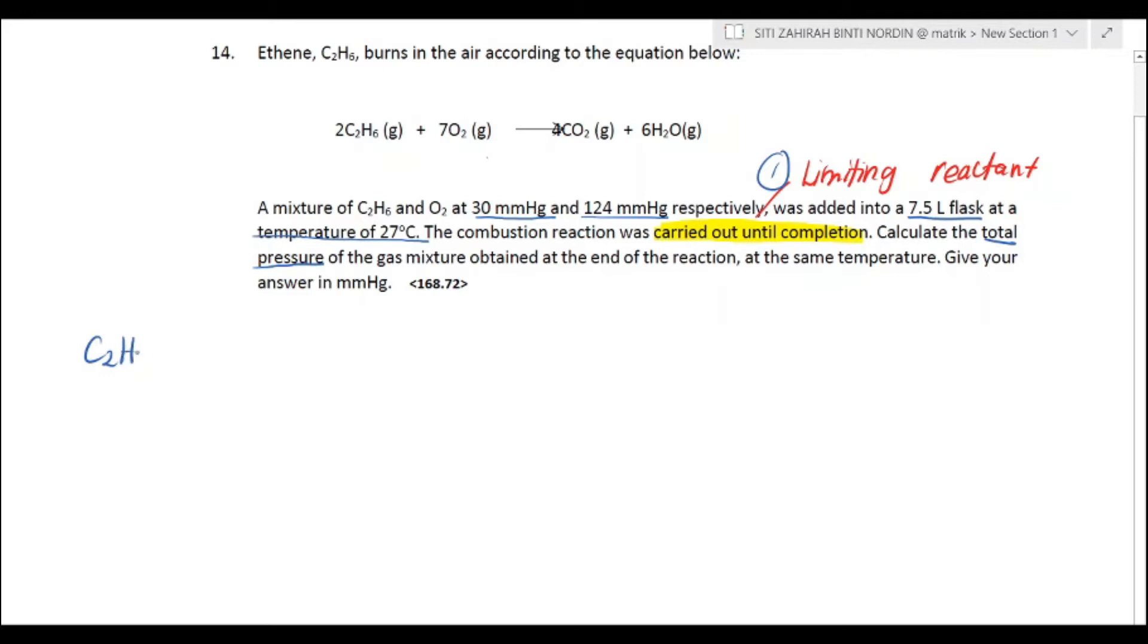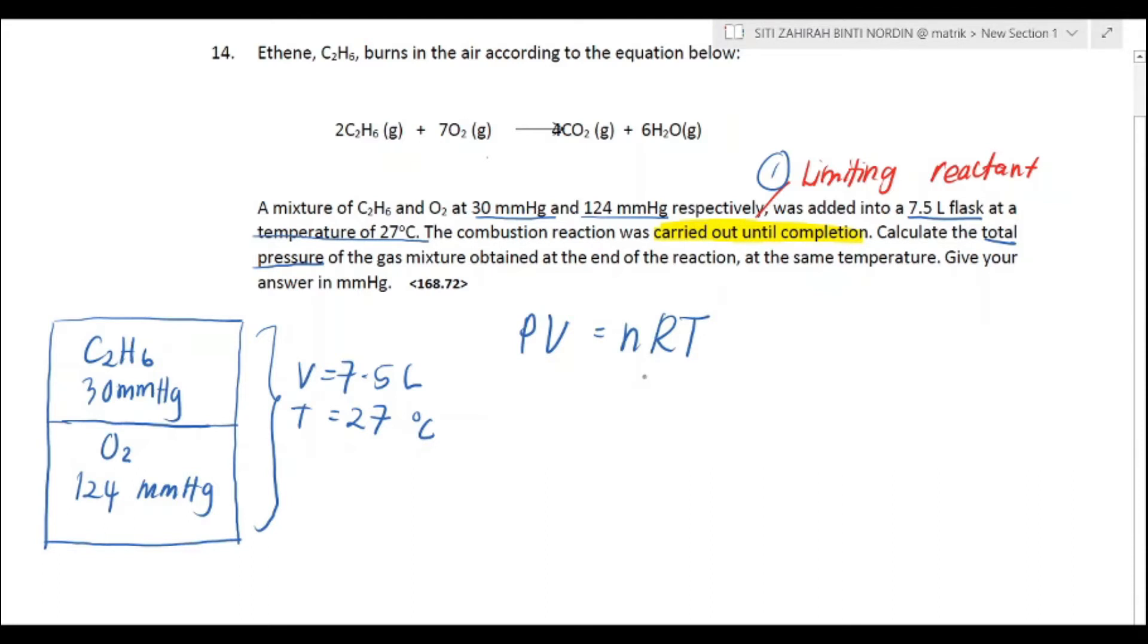Write down your starting information first. We've got C2H6 with pressure of 30 mmHg and O2 with a pressure of 124 mmHg. When they are mixed in a container, it has a volume of 7.5 liters and temperature of 27 degrees Celsius. Calculate the total pressure of the gas.